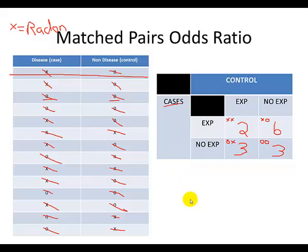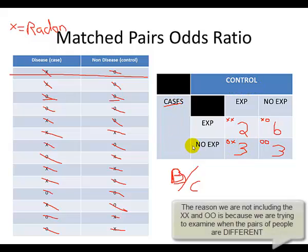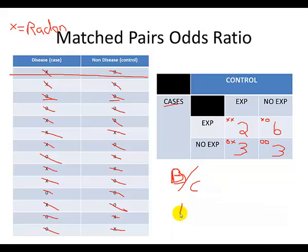The formula for the matched pairs odds ratio is B over C. We want to know when the exposure occurred among the cases but not among the controls, and compare that to the times the exposure happened in people without the disease when those who had the disease were not exposed. In our matched pairs odds ratio, we're taking the number of people who had the disease and were exposed compared to their match who was not exposed and did not have the disease — so six — and comparing that to the times when the control was exposed and the person with cancer was not, which is three. That gives us two.